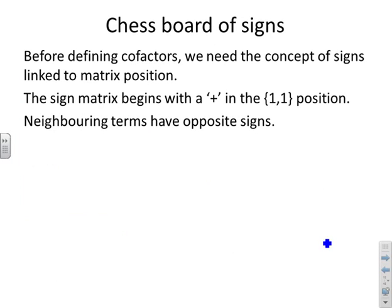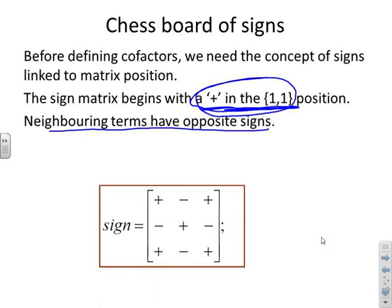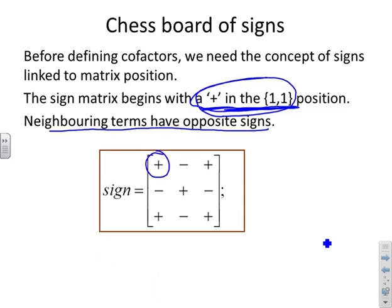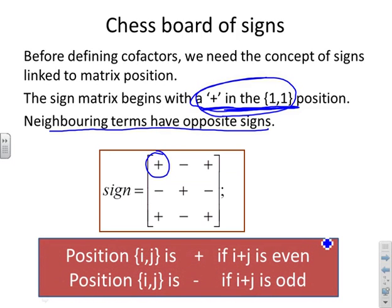Before defining cofactors, we need a concept of signs linked to a matrix position — a chessboard of signs. We start with a positive sign in the 1,1 position, and then neighbouring terms must have opposite signs. So the signs toggle: plus, minus, plus, and so on in any direction. You'll notice that position ij is positive if i+j is even, and negative if i+j is odd.